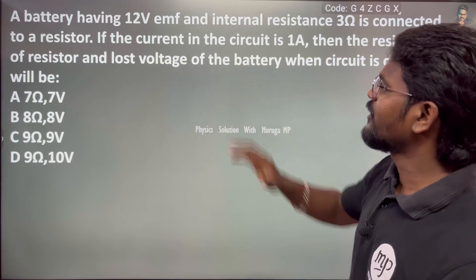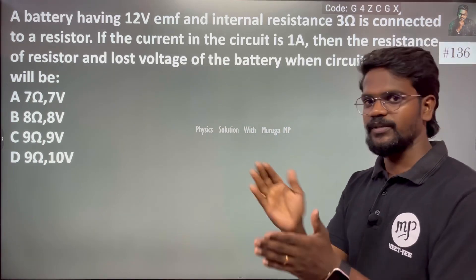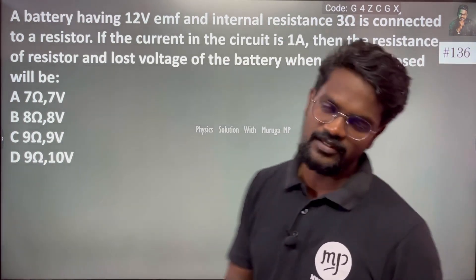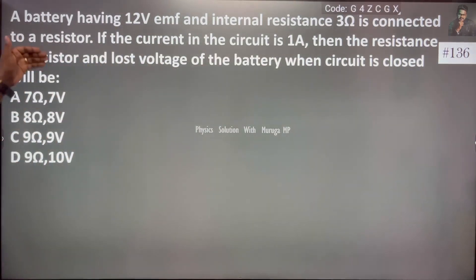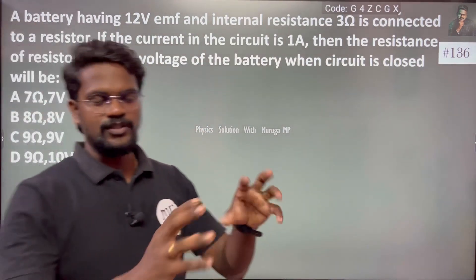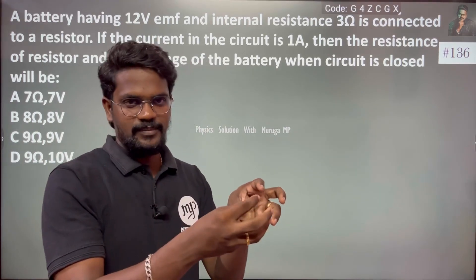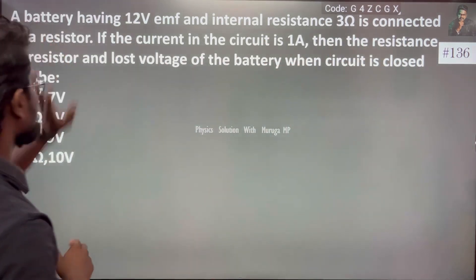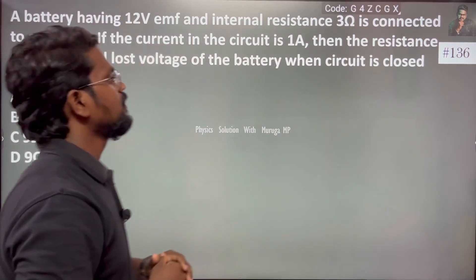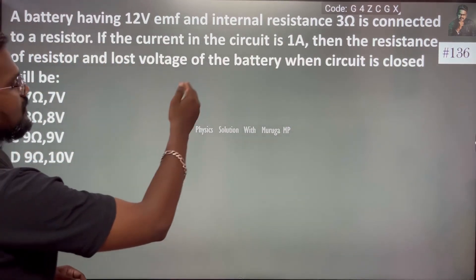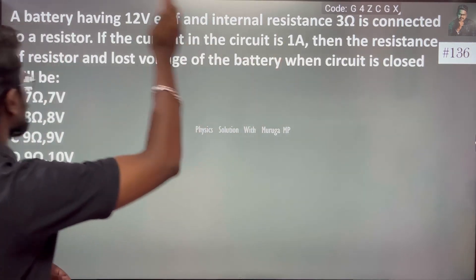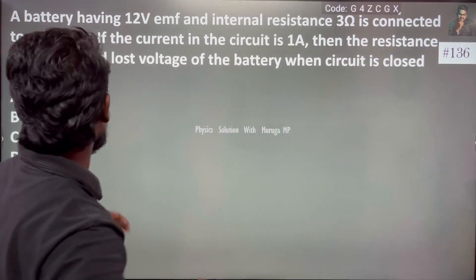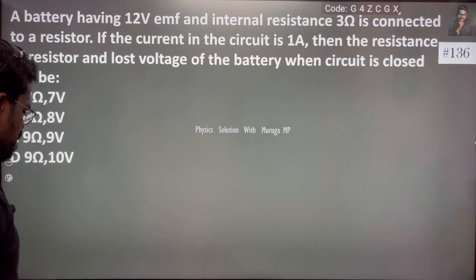A battery having 12 volt EMF and internal resistance is 3 ohm. It is connected to a resistor. It is a simple circuit. If the current in the circuit is 1 ampere, then the resistance of the resistor and the lost voltage of the battery when the circuit is closed will be what? This is a simple question.